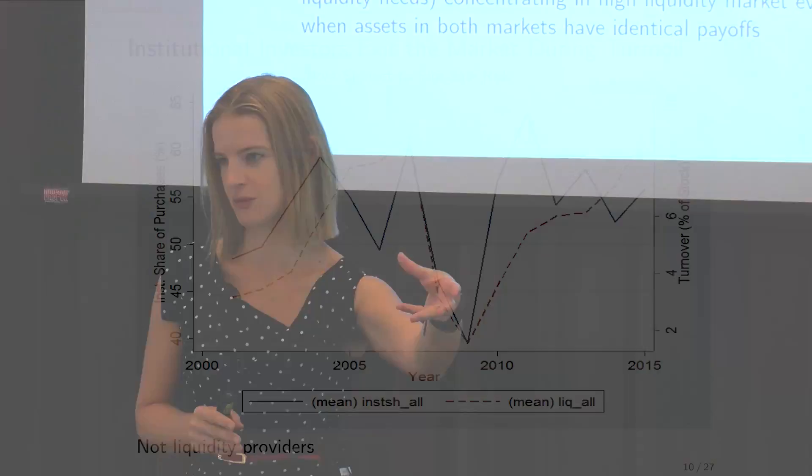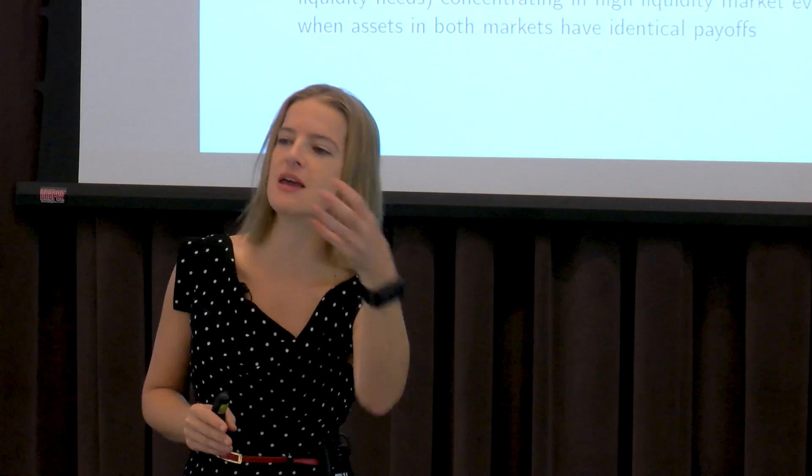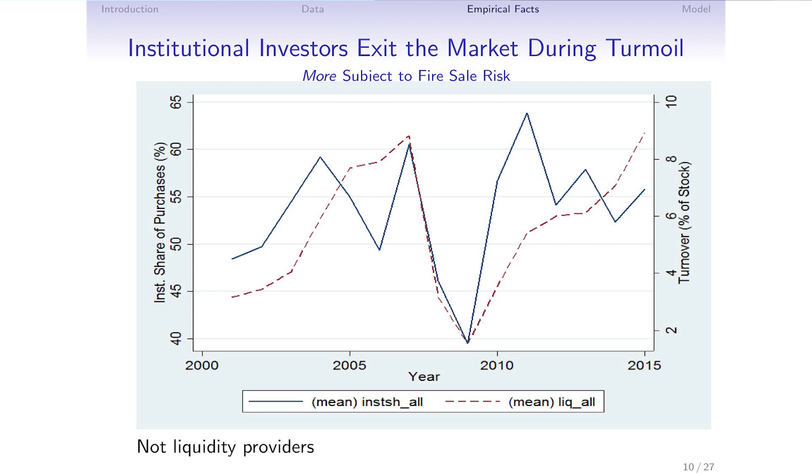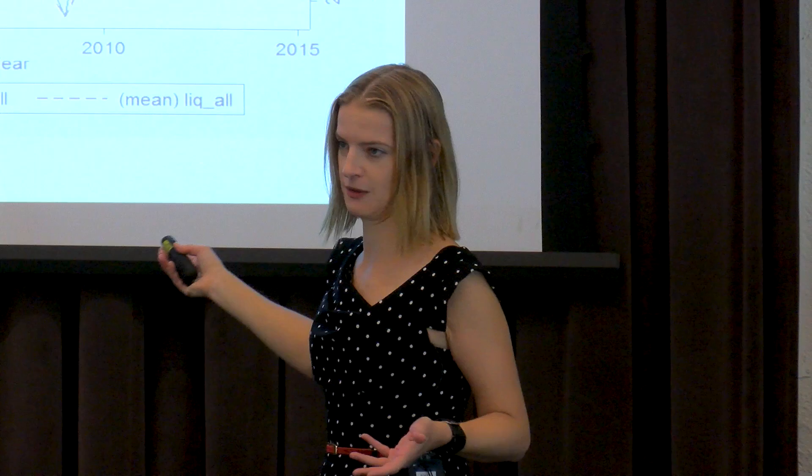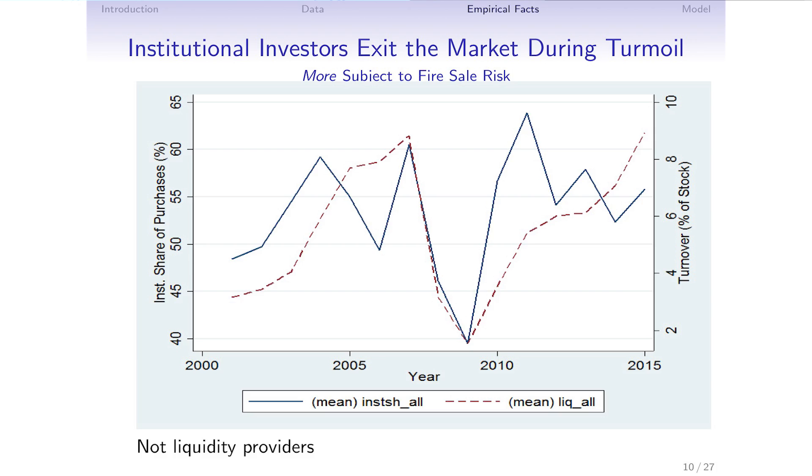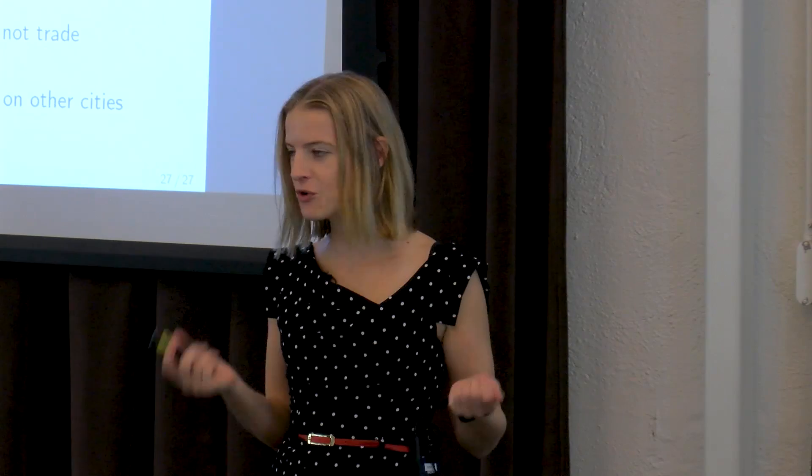In support of this idea that institutional investors are actually the fast money in commercial real estate, institutional investor share goes from 60% to less than 40%, so they're leaving the market. If you're an institutional investor, the problem with Pittsburgh is that it doesn't offer you enough liquidity.